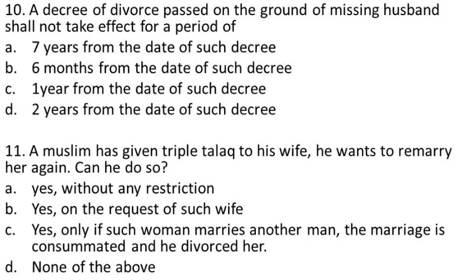Question 10: A decree of divorce passed on the ground of a missing husband shall not take effect for a period of — (A) seven years, (B) six months, (C) one year, (D) two years from the date of such decree. The answer is B: six months from the date of such decree.